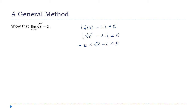I can add 2 to all three parts: 2 - ε < √x < 2 + ε. And then I square all three parts, giving me (2 - ε)² < x < (2 + ε)².